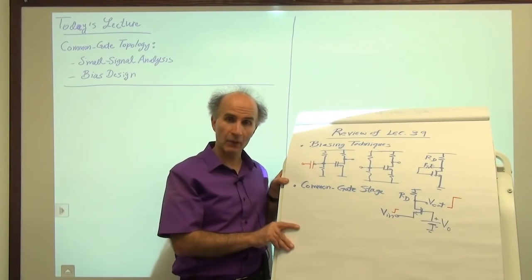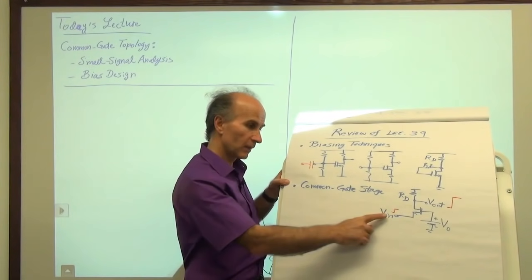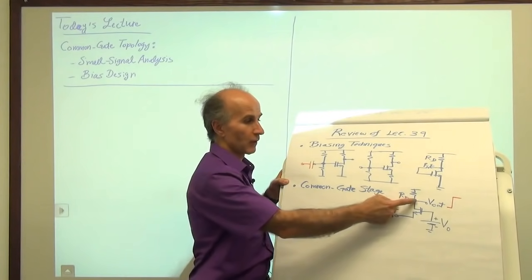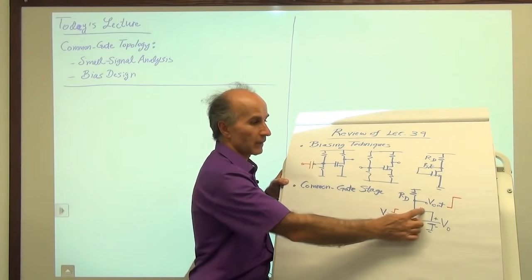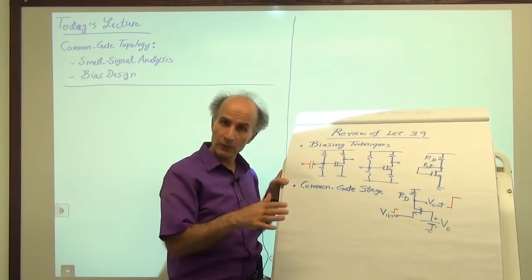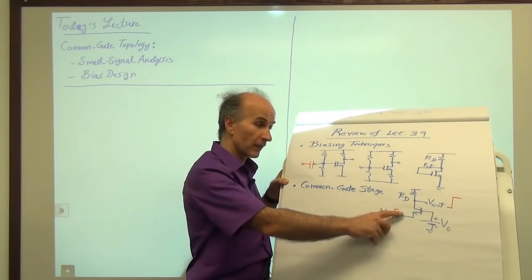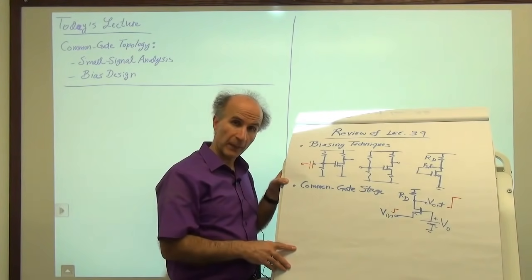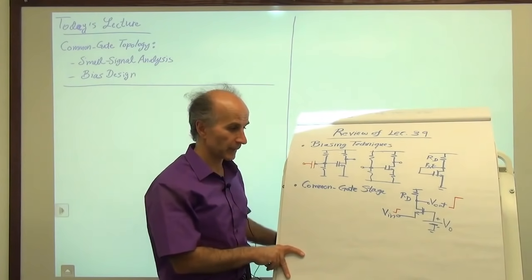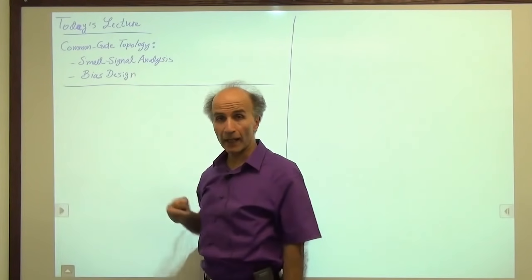We also took a brief look at the common gate stage. This stage is defined as one whose input is applied to the source of the transistor, and whose output is sensed at the drain of the transistor. Then we have some sort of load between the drain and the supply voltage, and the gate voltage has to be biased. From our simple qualitative analysis last time, we saw that if the source voltage goes up, the drain voltage also goes up, so we expect that the voltage gain of the circuit is positive, not like that of the common source stage. Today we'll dig deeper into the common gate stage and look at the small signal properties and then its bias design.